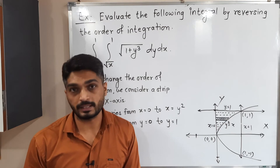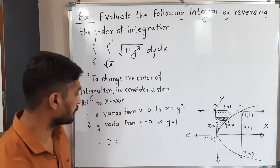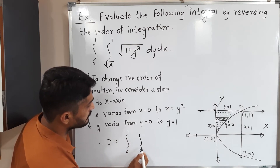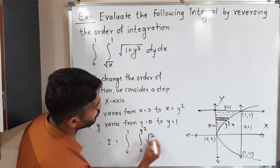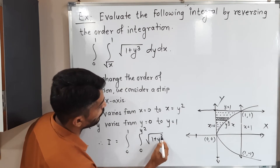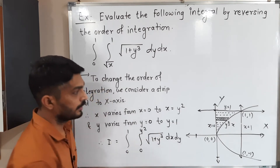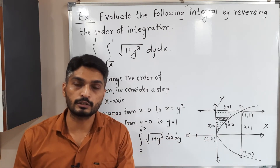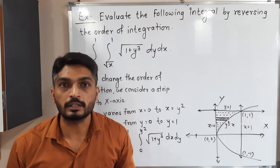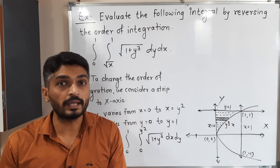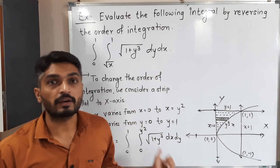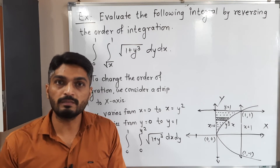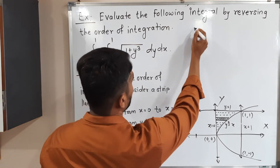From this we get the new limits: x goes from 0 to y², and y goes from 0 to 1. So the integral becomes I = ∫₀¹ ∫₀^(y²) √(1 + y³) dx dy. The inner integration is now with respect to x and the outer with respect to y — we have successfully changed the order of integration from dy dx to dx dy.